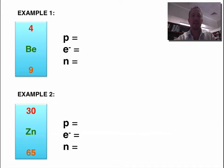Okay, so here's an example. What I suggest you do is pause the video here, and have a go at these two examples and see how you go. Alright, pause the video now, and see if you can work out the number of protons, electrons and neutrons for Be, beryllium, and Zn, zinc.